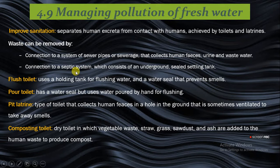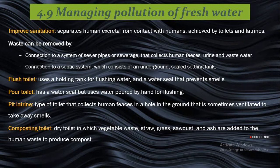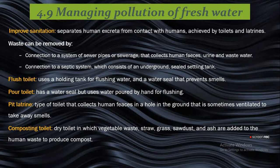There is also connection to a septic system, which consists of an underground sealed settling tank, to separate the human excreta from contact with humans. A flush toilet uses a holding tank for flushing water and a water vessel that prevents smell. A pour toilet has a water seal but uses water poured by hand for flushing. A pit latrine is a type of toilet that collects human faeces in a hole in the ground, sometimes ventilated to take away smell.